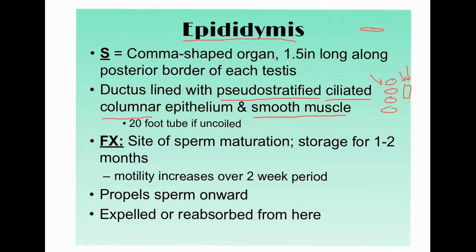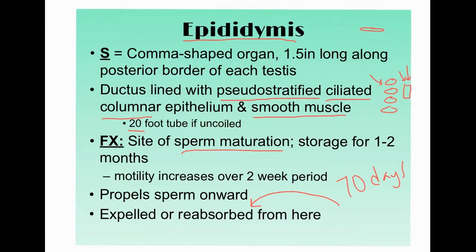If uncoiled, the epididymis tube would be about 20 feet long. This is the site of sperm maturation, storing sperm for one to two months. If sperm aren't ejaculated within about 70 days, they are reabsorbed and broken down by the body. If not reabsorbed, they are expelled through ejaculation. Sperm motility increases over a two-week period.